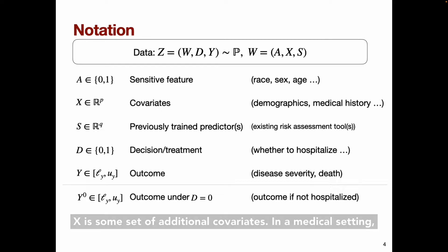X is some set of additional covariates. In a medical setting, for example, this could be demographics and medical history. S is some set of previously trained predictors, if we have any. So these might be existing tools whose fairness or accuracy we wish to improve. For example, S could represent predictors that are used in hospitals to help decide who needs to be admitted versus being sent home to recover.